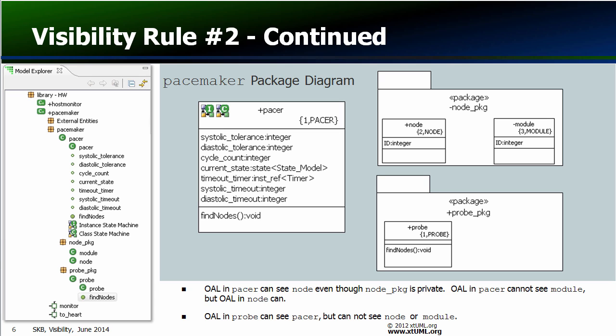This behavior is closely analogous to that of a text-based programming language. For example, can you see public members of a private class in Java? The answer is yes, but only if you are in the same package as that private class. If you are not in the same package, you can't see the private class, let alone its public members. In both the XTUML and Java scenario, marking the container — the XTUML package or the Java class — as private does not mean that its contents are entirely hidden from everyone in the outside world. There are some elements that do still have access to the internals of the container, even though the container itself is marked as private. In the case of XTUML, the visibility rules define that peer elements fall into this category. Peers are always allowed to look inside one another, even if one or both of them is private.